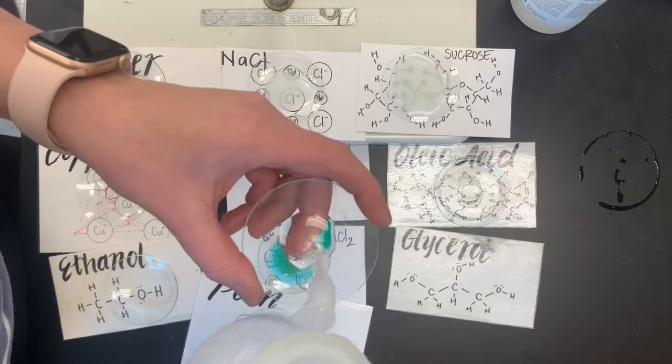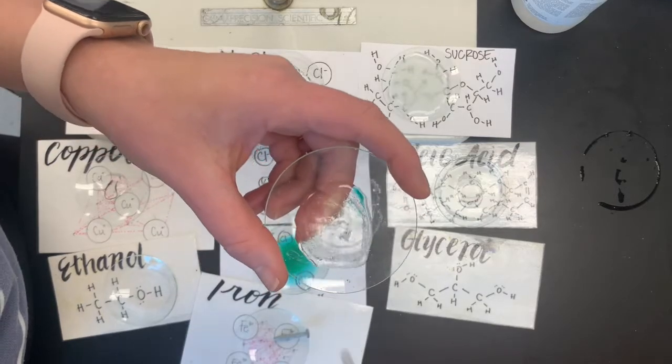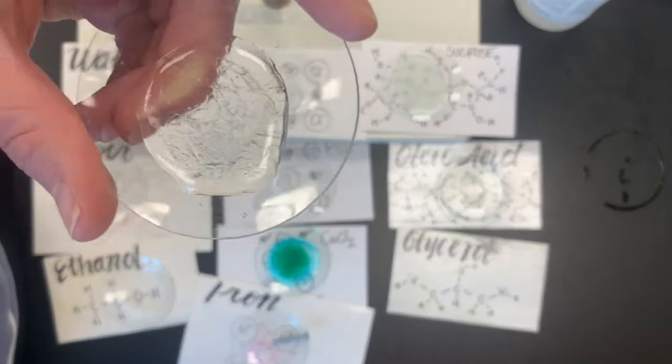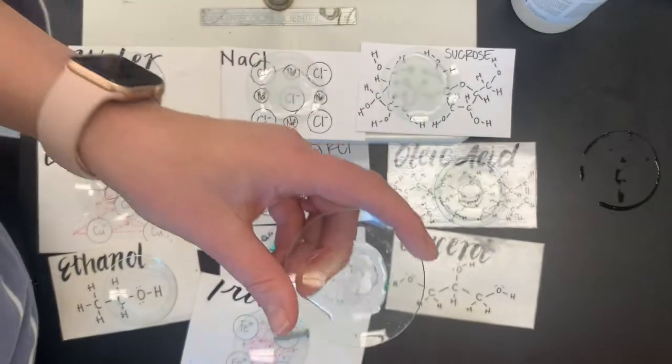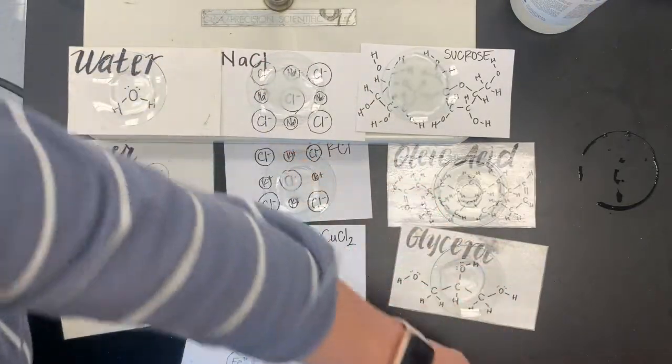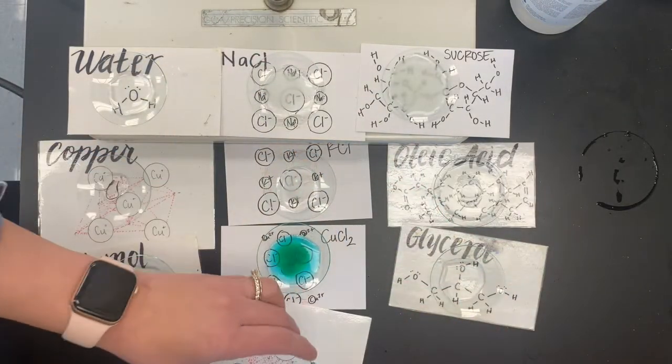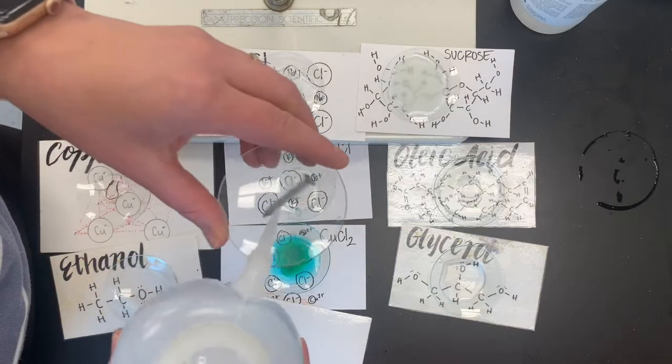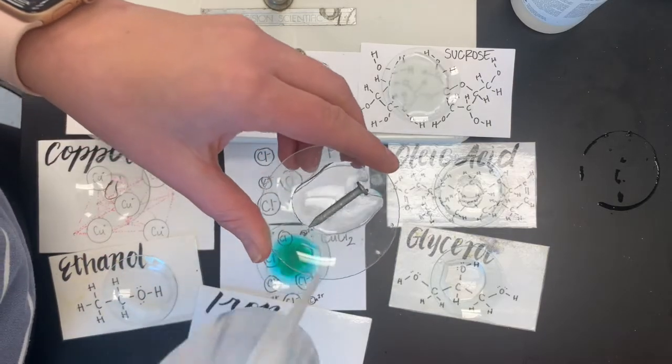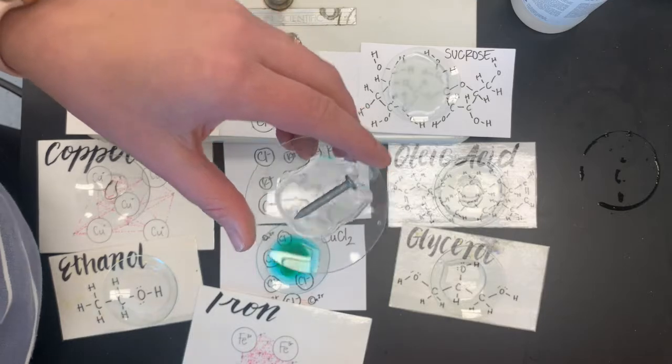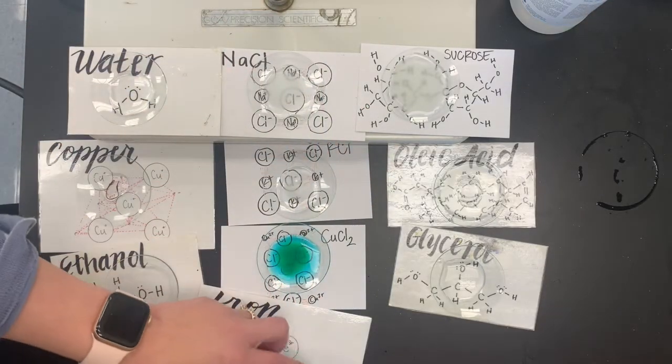Glycerol. Again, I'm seeing lines. Doesn't really look like it's mixing super well. And then, what do we think? What's going to happen to this nail? Is it going to dissolve? No, I don't have a strong acid here. Cool. So that's the solubility test.